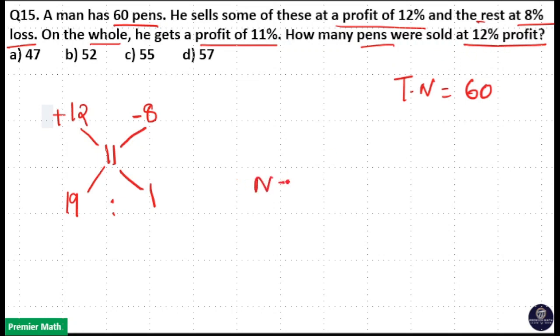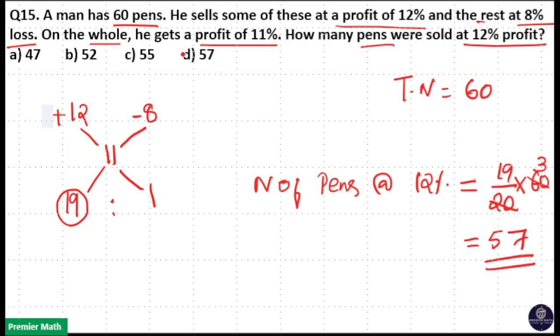This is 19 parts and the total is 20 parts. 20 times 3 equals 60, so 19 times 3 equals 57. Your answer is option D.